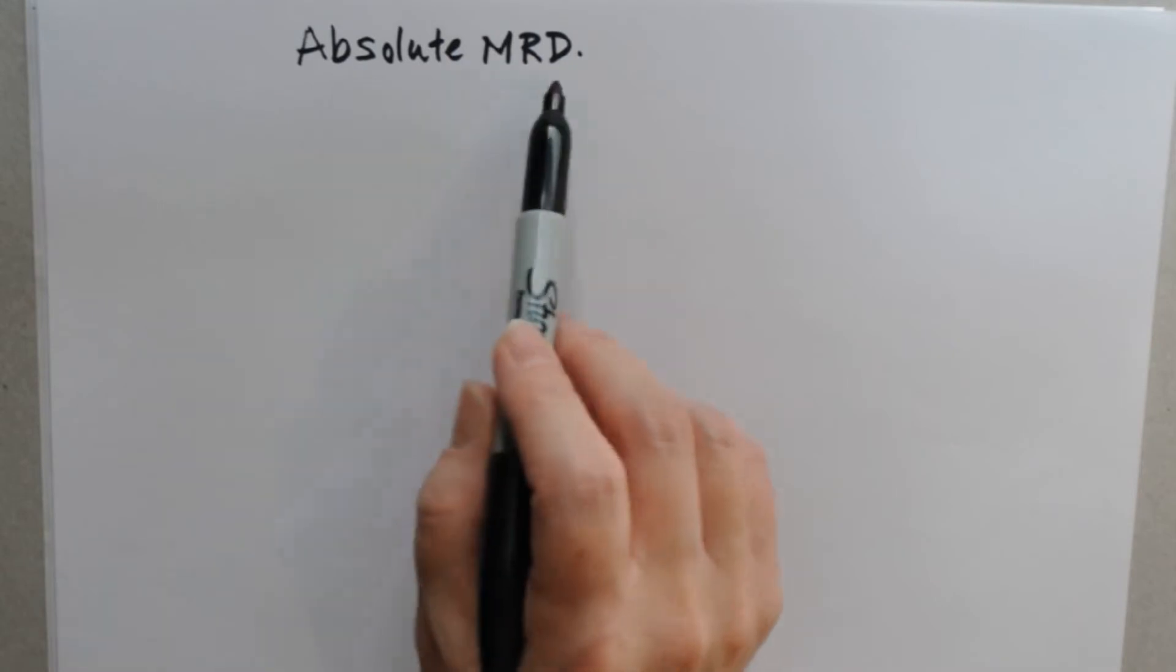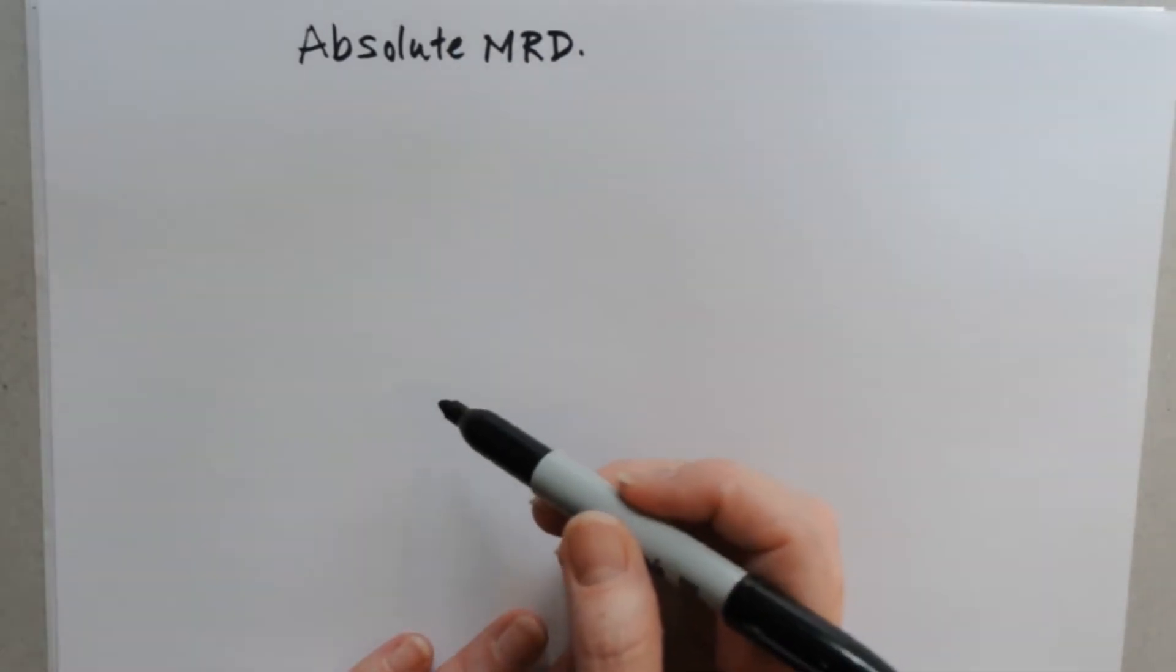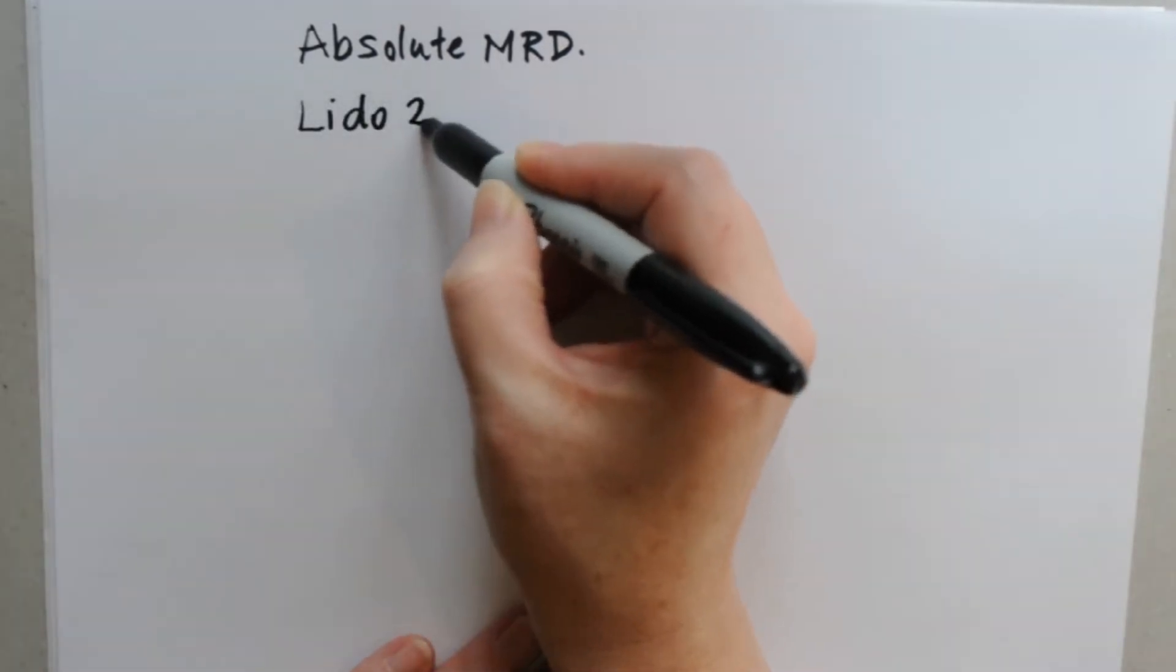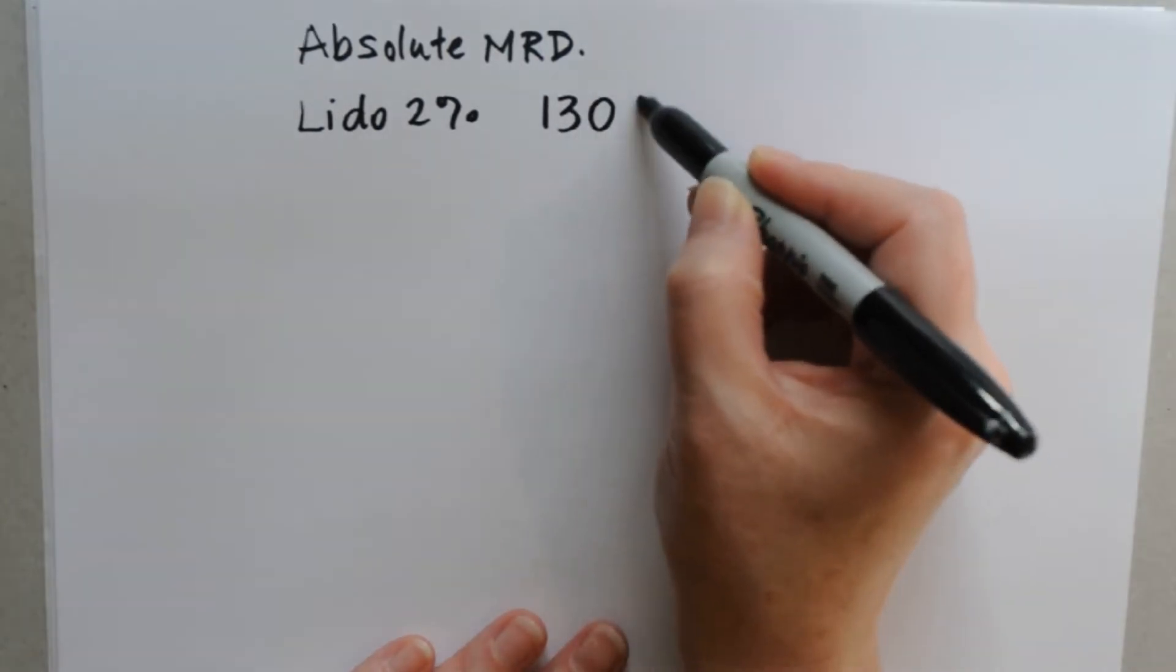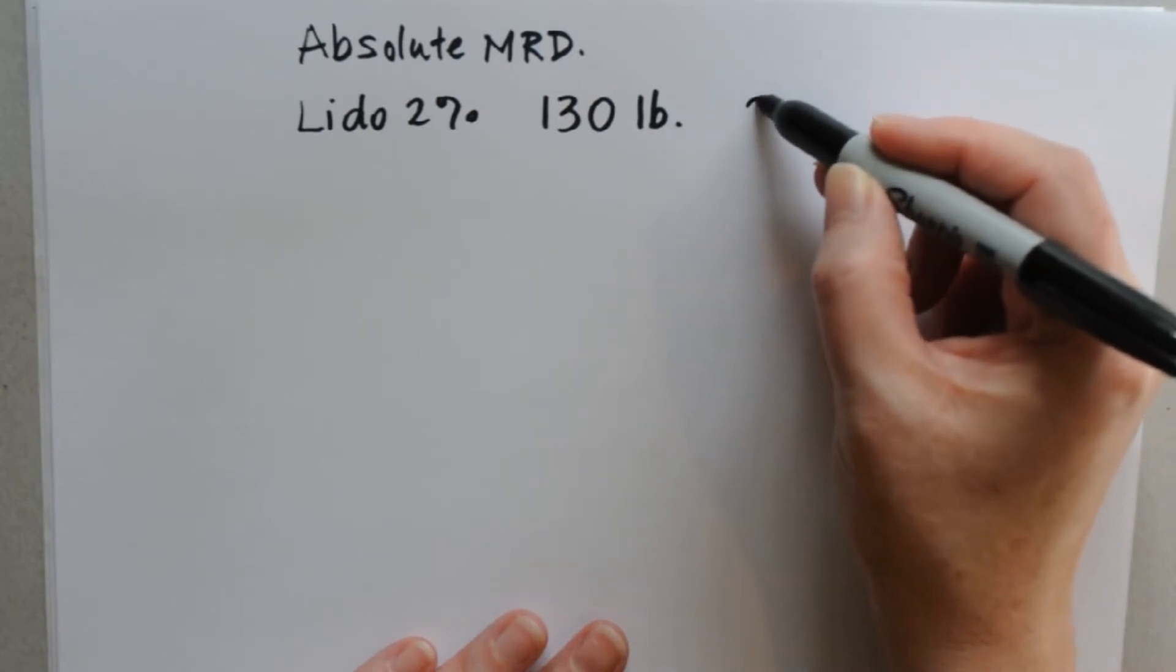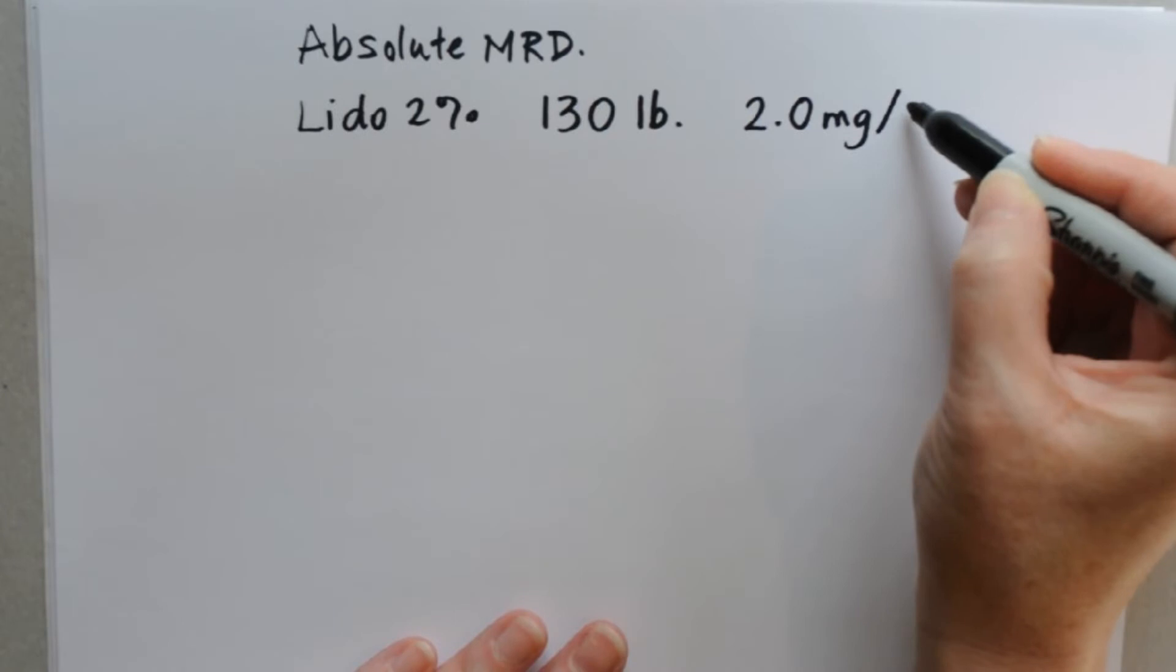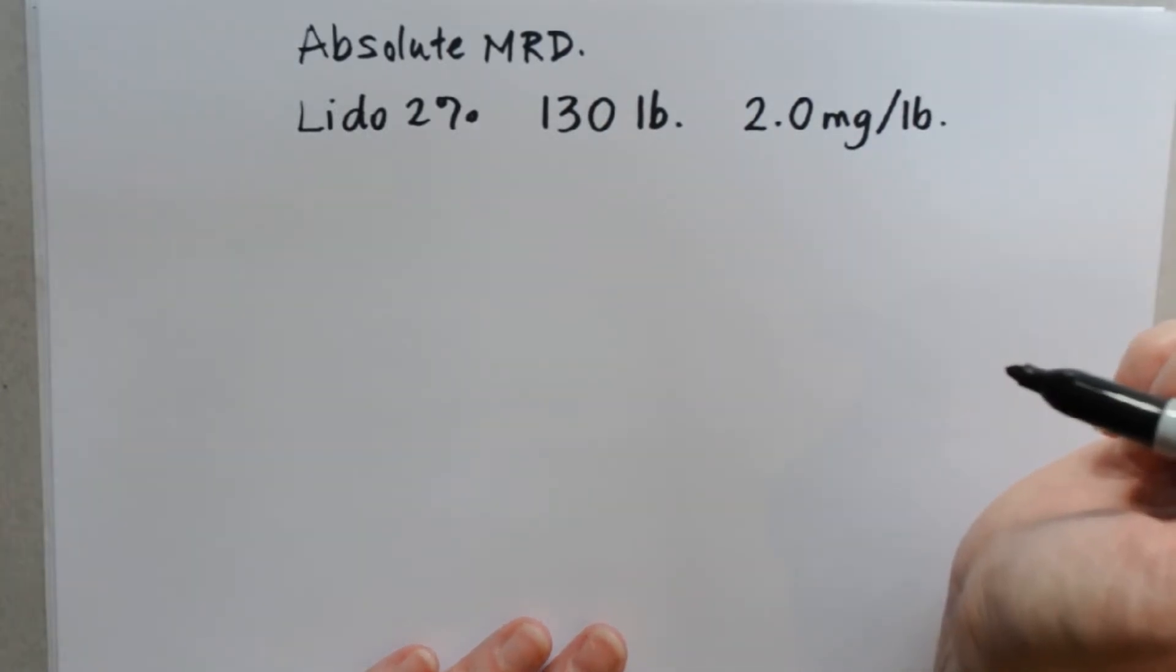So let's take a look at another example of calculating maximum dose when we factor in the absolute maximum recommended dose. We're going to use Lido 2% again, and let's make our patient 130 pounds this time. We learned in the last video that Lido, one of the things you need to memorize, is the maximum dose is calculated based on 2.0 milligrams per pound.